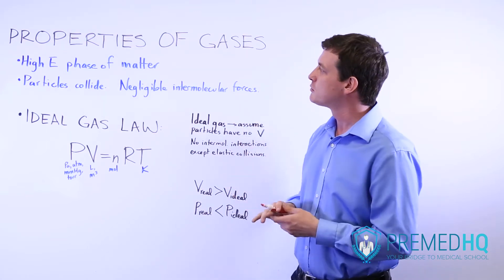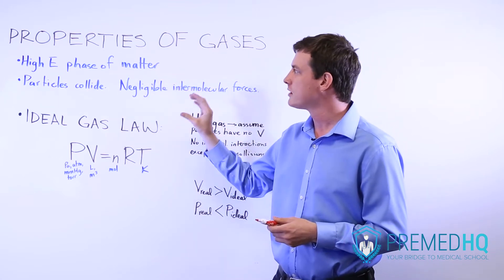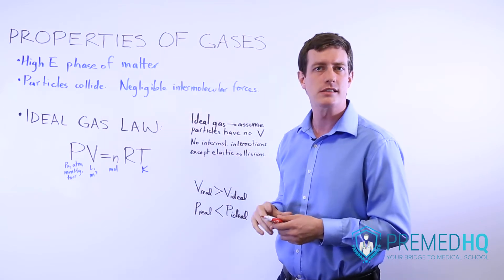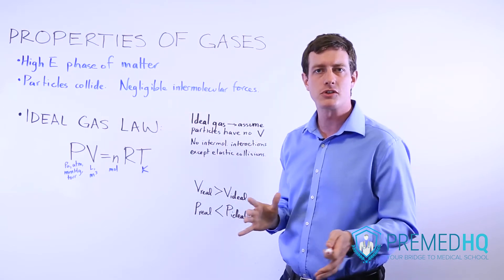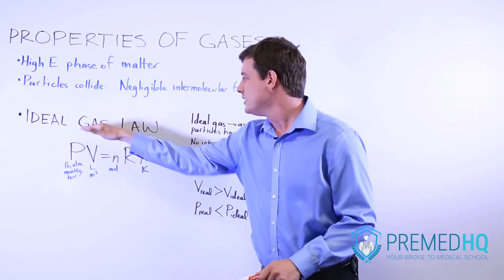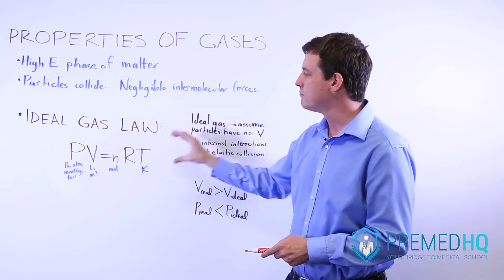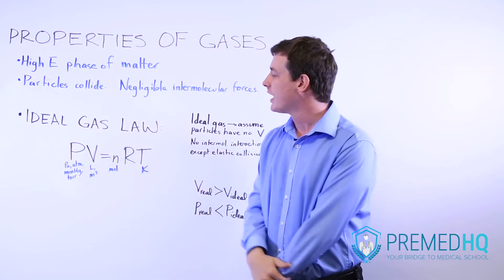So what we'll do now is we'll just accept this as our definition, not get too in-depth with it, and then we'll move on to some of the most unique qualities of gases that can be tested in physical chemistry. The first thing is to look at this ideal gas law, PV equals nRT. This is the most important equation when you're dealing with gases.